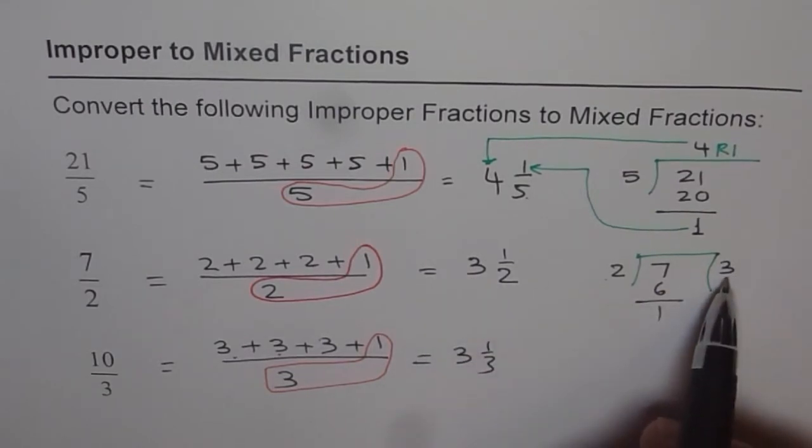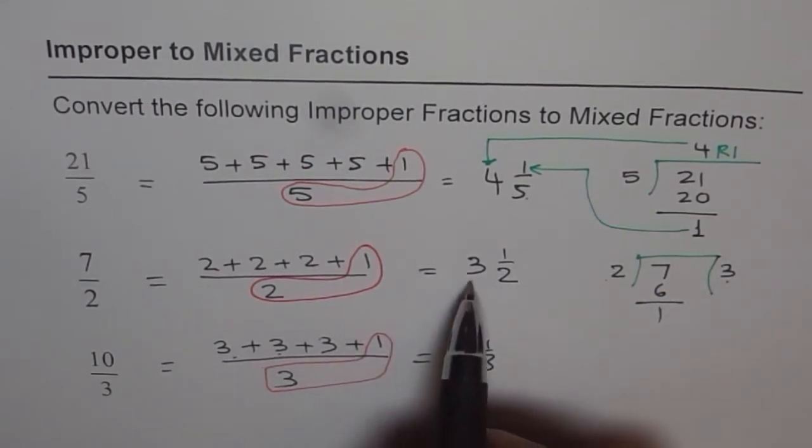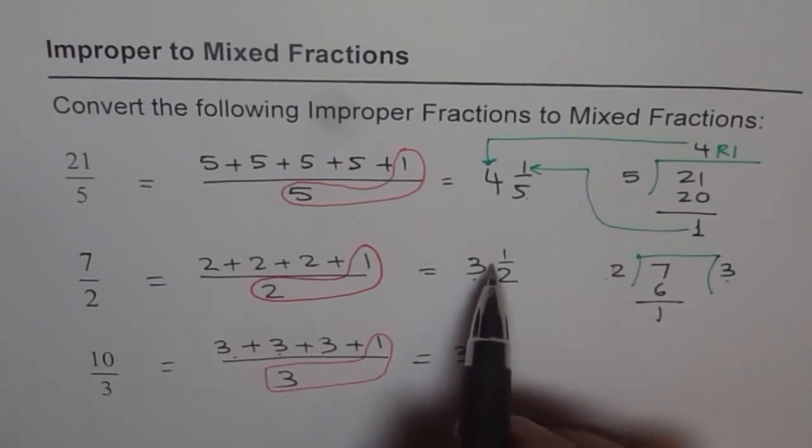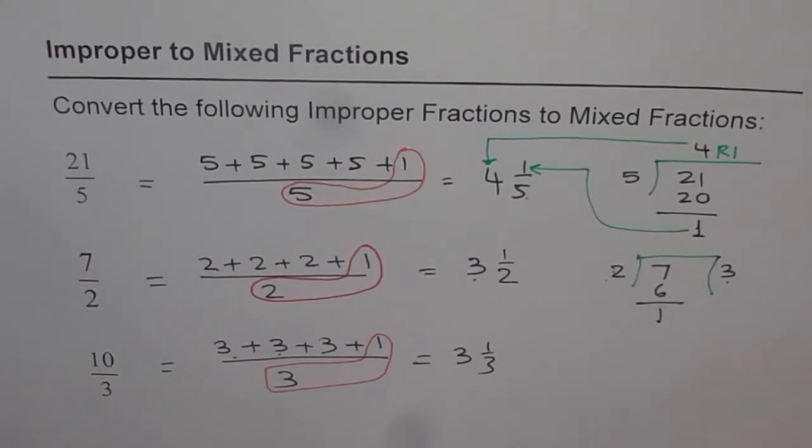That's what I've written here. 3 is the quotient, whole number. 1 is the remainder, 1 divided by 2. That is how you can write your improper fractions as mixed fractions.